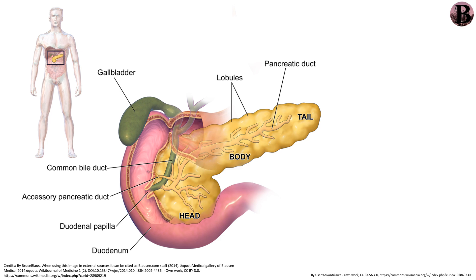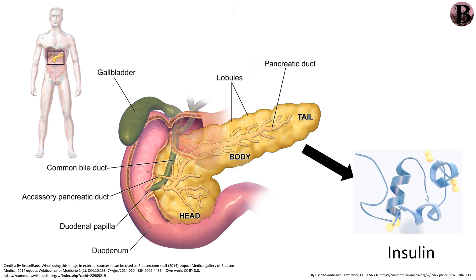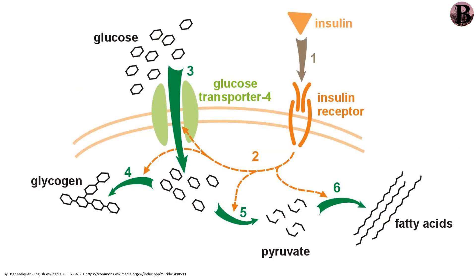So, as the sugar level rises in your body, the pancreas secretes a hormone called insulin, which directs the muscle and fat cells to take in glucose. Insulin's job is to bind to receptors on the cell's surface, causing glucose transporter proteins to come to the cell's surface as well and let glucose in.